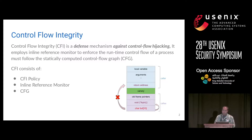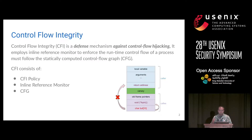If we look into any program, we will find out there are two versions of code pointers. One is the return address, the other one is the function pointer. For both of them, there are different solutions available. For the function pointer, we have a forward edge protection mechanism like CFI. CFI actually enforces some policy at the indirect call point, and the policy is validated through a pre-computed control flow graph. There are actually three parts of a CFI system: CFI policy, the reference monitor, and the CFG.